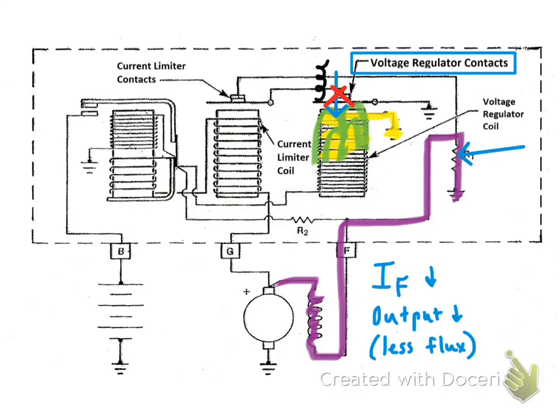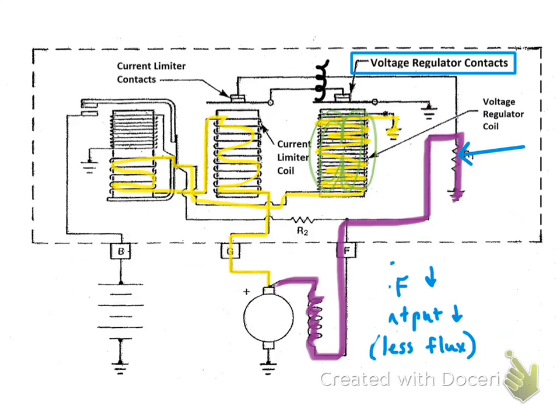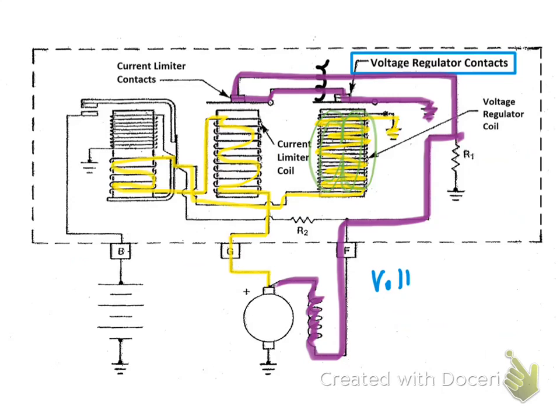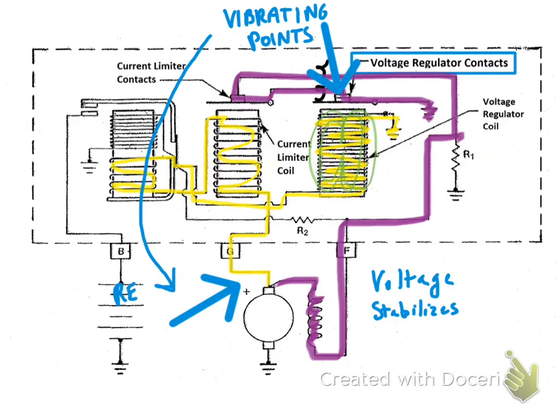Almost done. So then I used a thinner yellow line to show that now the voltage output has decreased. When it decreases, the magnetic field isn't as strong, and so it lets those points close again. When the points close, now the current can go back up through the points directly to ground without going through the resistor. And that will let the voltage stabilize. So those vibrating points at the top control the output of the generator. Right there. Any questions on that?